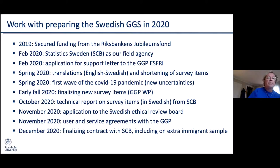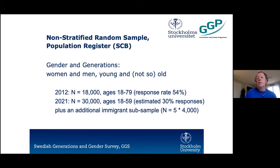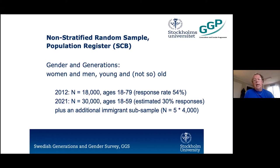Here is how the sample looked. We had a non-stratified random sample — in 2012 we had a stratified random sample, but now we decided to use the entire population as the basis for sampling through the excellent population register of Sweden. In 2012 we had 18,000 individuals aged 18 to 79 and got a disappointing 54% response rate. Statistics Sweden hinted we shouldn't expect more than 30%, so we increased the sample to 30,000 at ages 18 to 59 to ensure enough final respondents. We added an immigrant sub-sample focusing on the five biggest immigrant groups at ages 18 to 59 in Sweden.